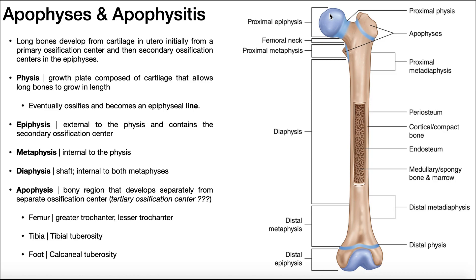So the femur actually has four secondary ossification centers: two are in the ends — proximal and distal epiphyses — and one is in each of the two apophyses, each with their own individual growth plates. These apophyses develop separately and also grow separately due to their distinct and separate ossification centers.